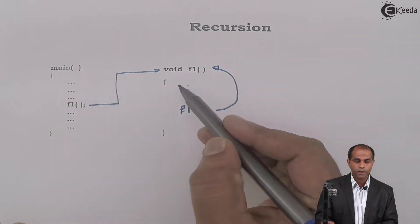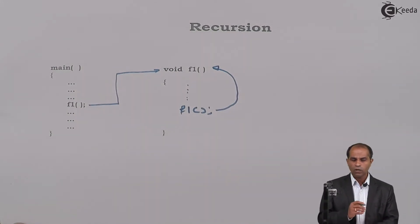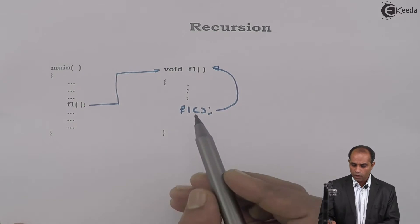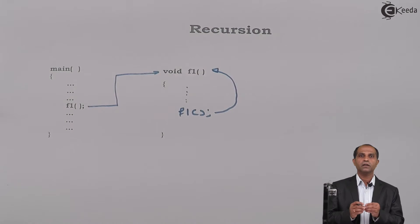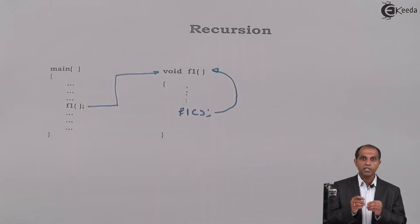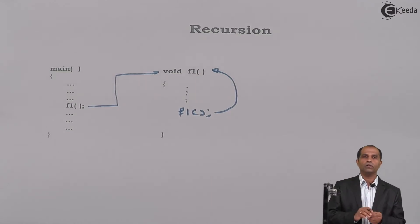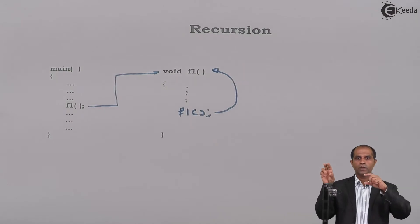When a function gives a call to itself, the process is known as recursion. It is going to repeat a particular task again and again. Now, the function never literally calls itself — it gives a call to a copy of its own. Internally, one more copy of f1 is created each time.